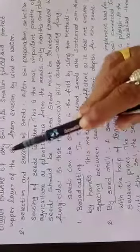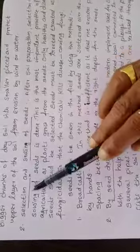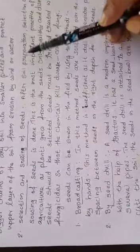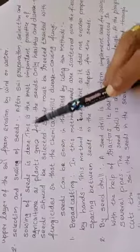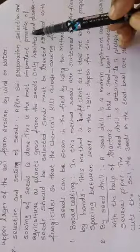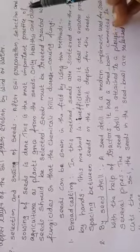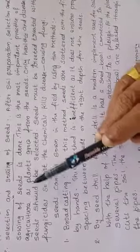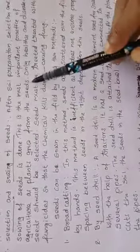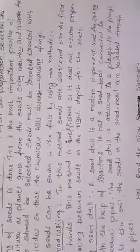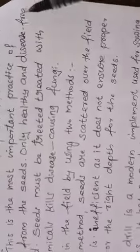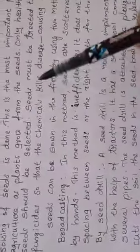Number two, selection and the sowing of seeds. After soil preparation, selection and the sowing of seeds is done. This is the most important practice of agriculture as plants grow from the seeds only.